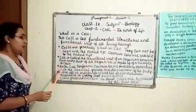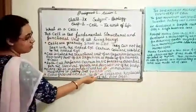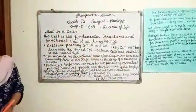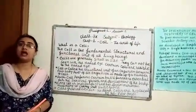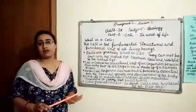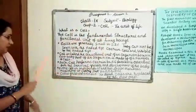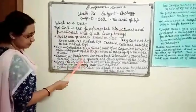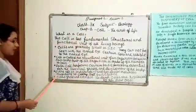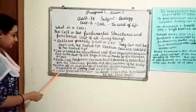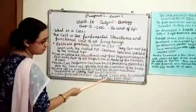Each cell performs certain basic functions essential for the survival, growth and development of the body. Cells perform all the life processes such as respiration, excretion and growth, which are necessary for the survival of an organism. So, cell is called the functional unit of living beings. Every cell is independent and has its own metabolic machinery to carry out the functions. Cells grow and even die, and the dead cells are replaced by new ones.